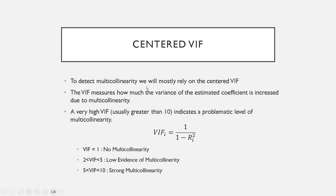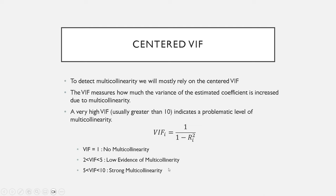To detect multicollinearity, we will mostly rely on the centered VIF, which measures how much of the variance of the estimated coefficient is increased due to multicollinearity. A very high VIF — usually greater than 10 — indicates a problematic level of multicollinearity. The VIF is calculated as 1 over (1 minus the R-squared) of the explanatory variable. As a rule of thumb: a VIF of 1 means no multicollinearity; values between 2 and 5 indicate very low multicollinearity; and values between 5 and 10, or even bigger — 20, 30, 40 — indicate really strong multicollinearity.